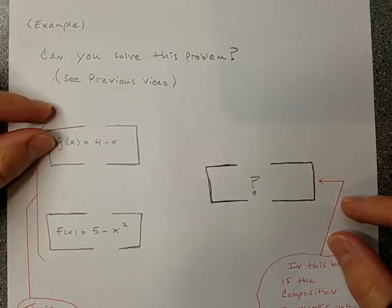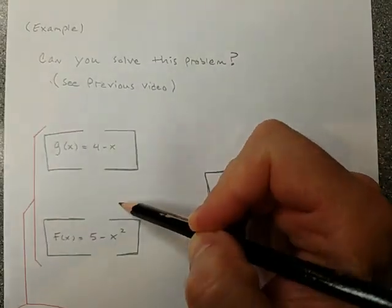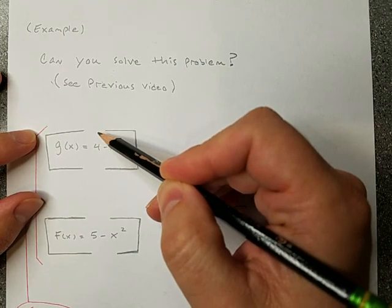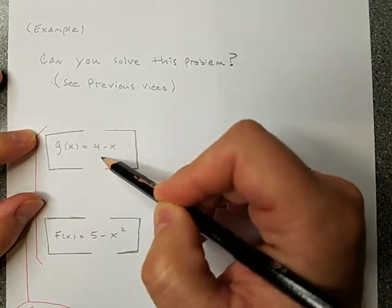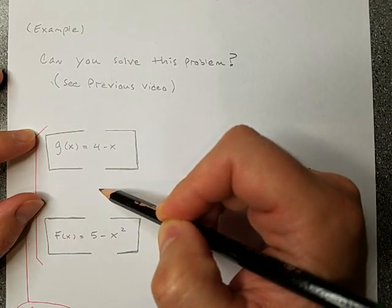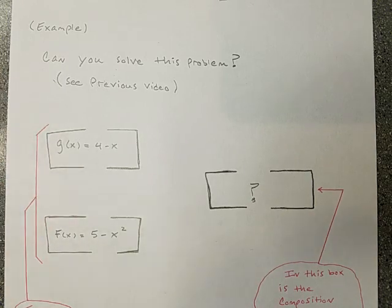All right, so a function is an input and an output, meaning that a number goes in, you do whatever the function says to do, and then you get another number back out. So when you think of a function, think of number in, number out, or input and output. That's how you think about it.